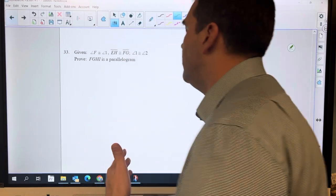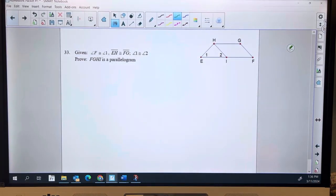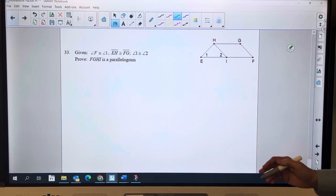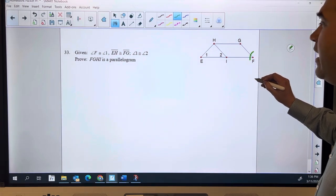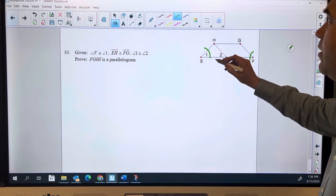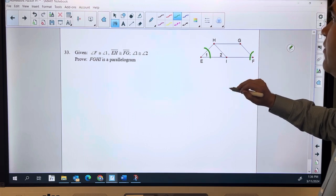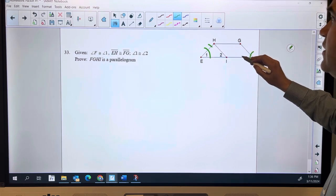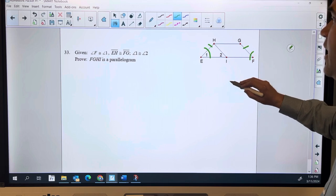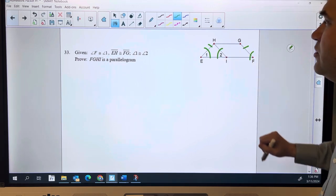This one is almost number 32 backwards. Again, the picture is basically the same idea here. We're given that angle F right there is congruent to angle 1. We're also given that EH is congruent to FG, and we're given angle 1 is also congruent to angle 2.